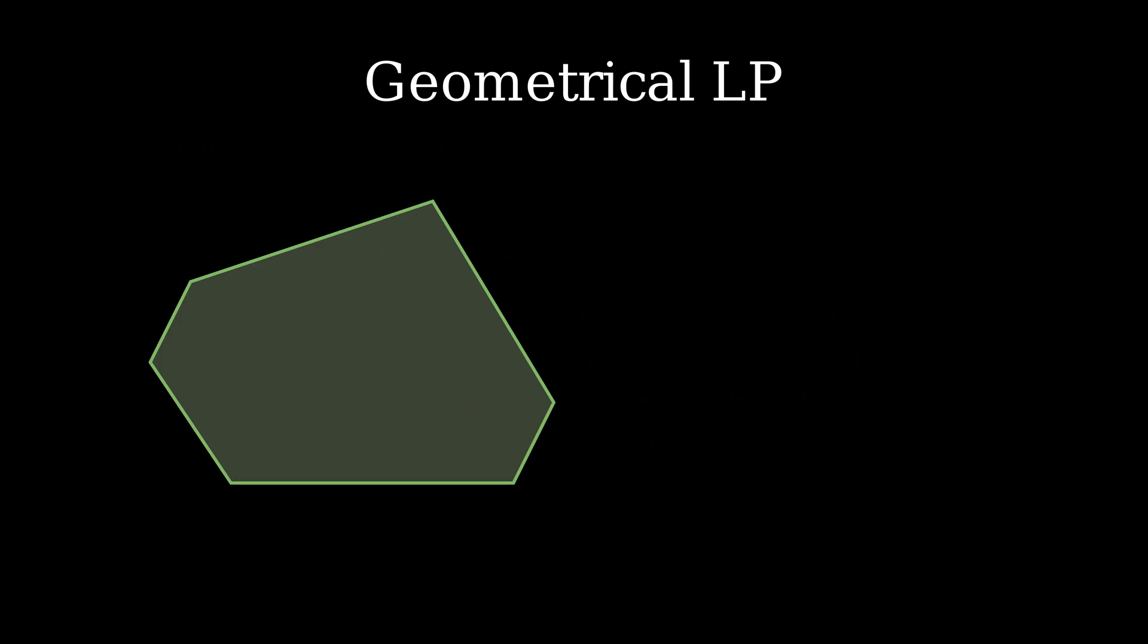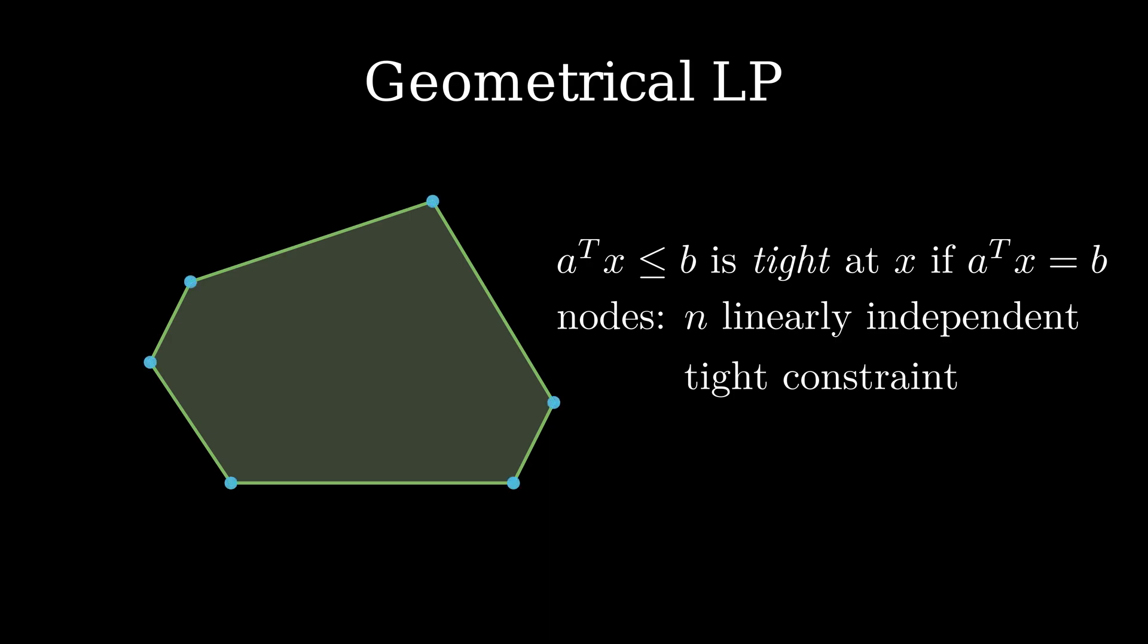We call a constraint tight for a point x if x lies on the hyperplane given by the constraint. For an LP with n variables, the feasible points that fulfill n linearly independent tight constraints are called the nodes of the polytope. Note that n is the number of variables, and as such also the dimension of the polytope. Similarly, the edges of the polytope are given if n minus 1 constraints are tight. If two nodes share an edge, they are neighbors.